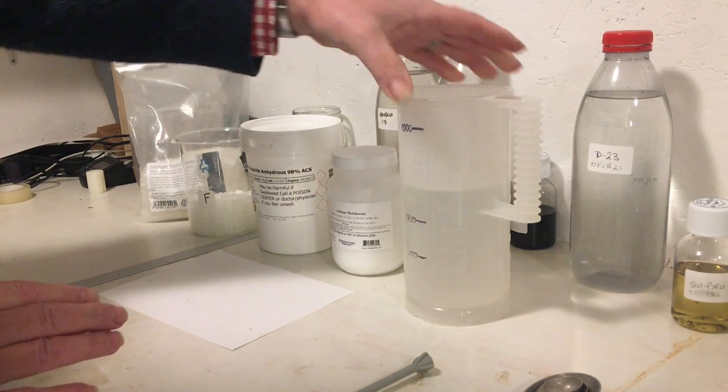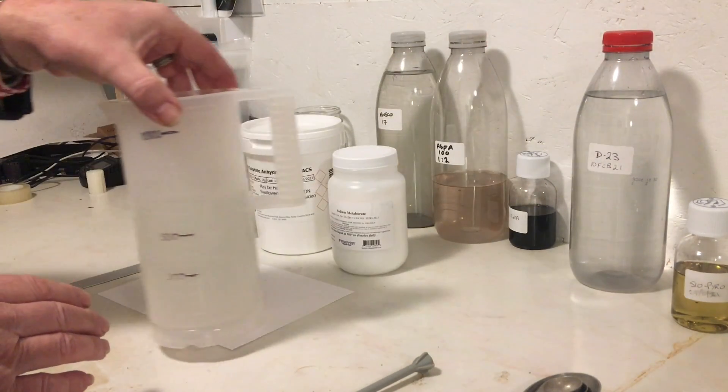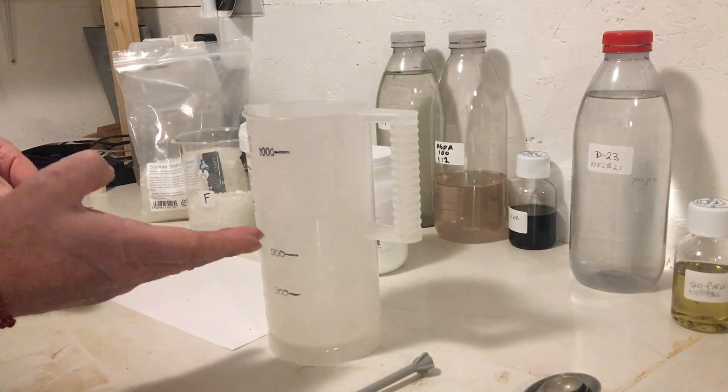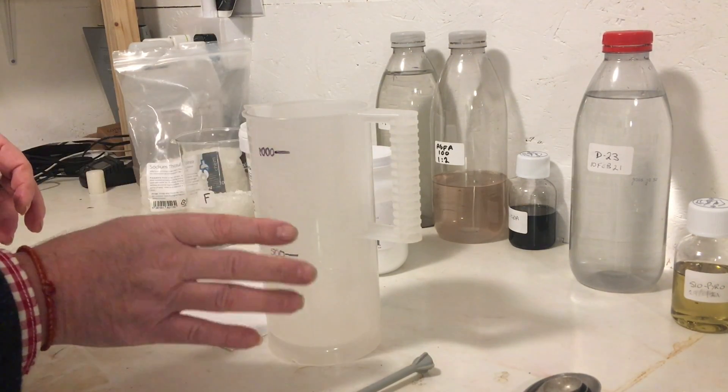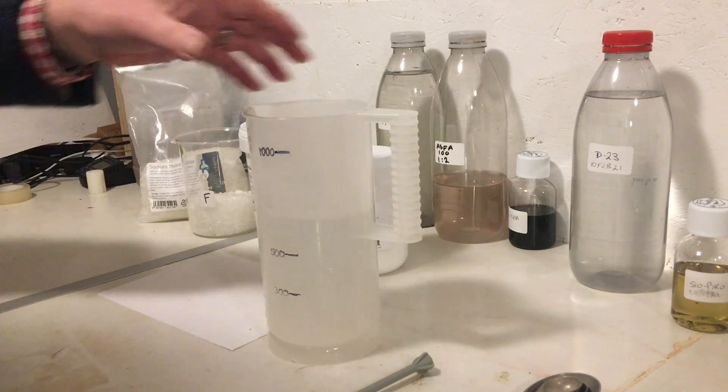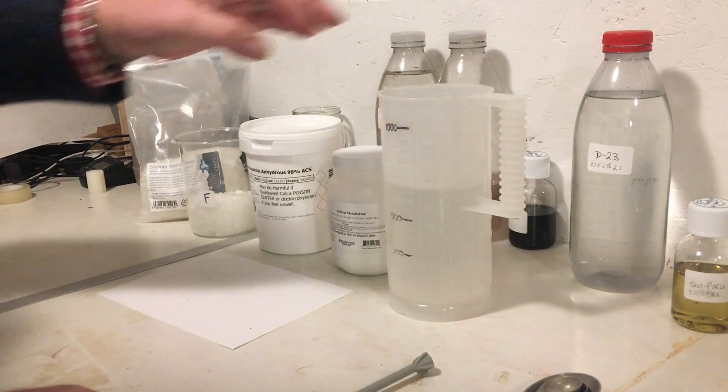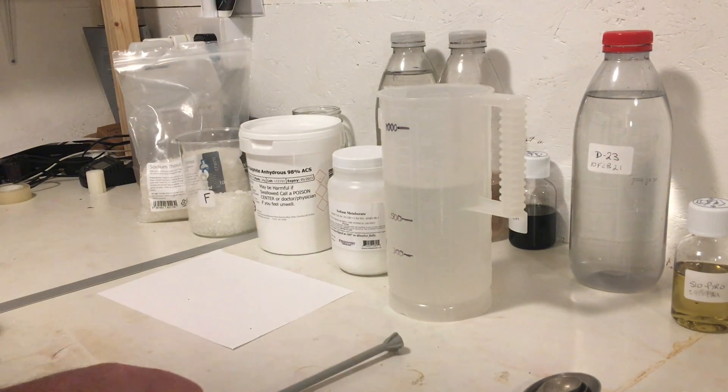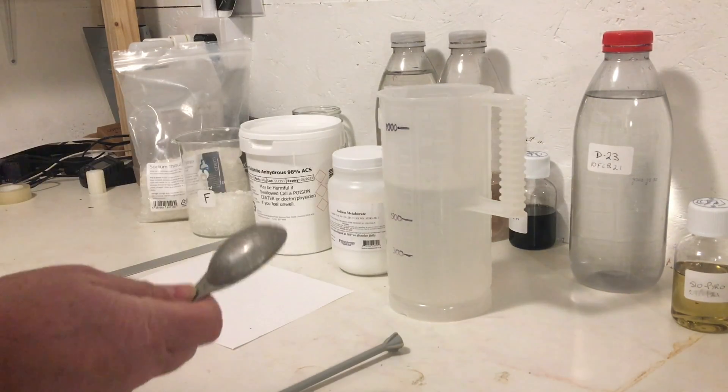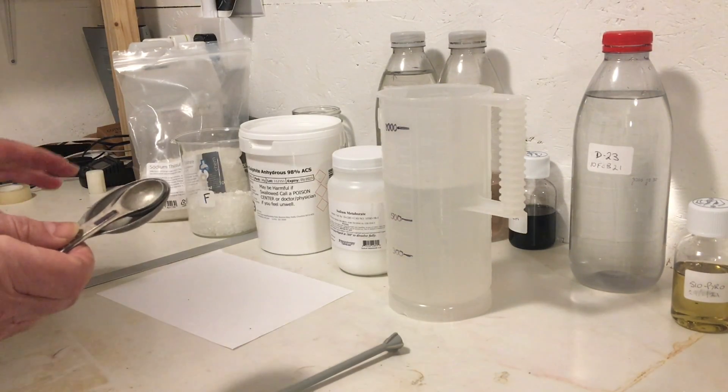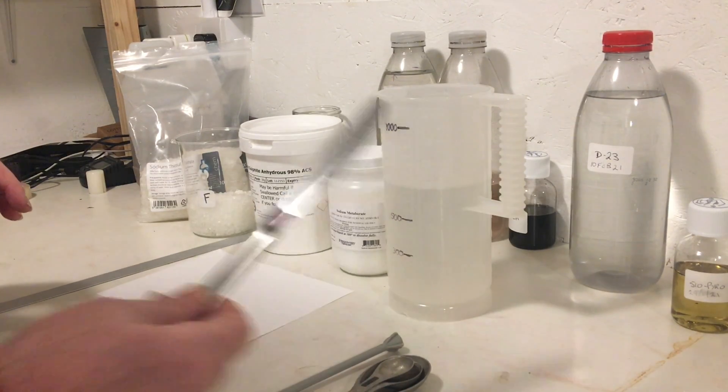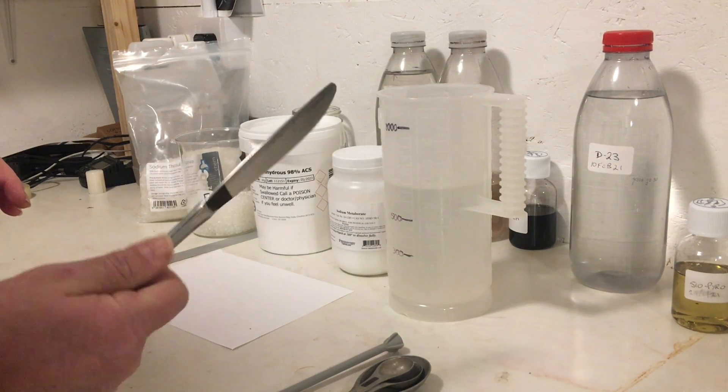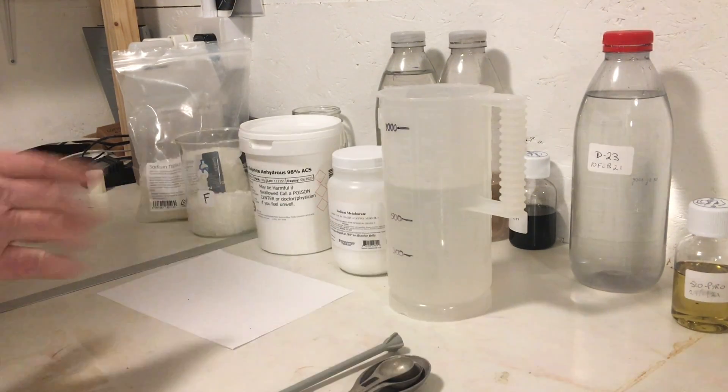We're also going to need water to dissolve it all in. Here we have water. I've got about 600 to 700 milliliters of warm water. It's around 40 degrees centigrade in there. We're going to need a stirring stick. We're going to need our teaspoon measurements because I'm assuming that many of you don't have scales.